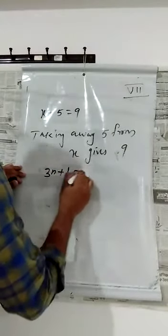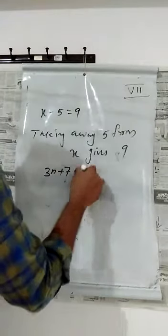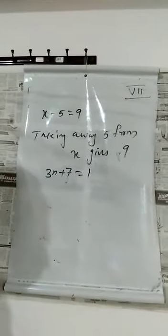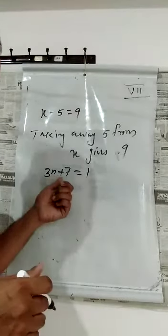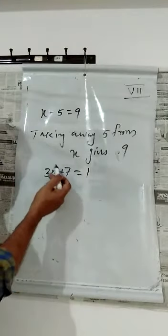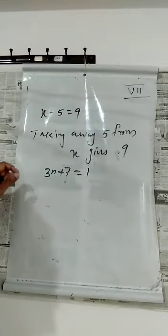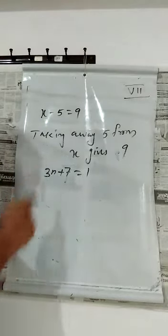One more: 3n plus 7 equal to 1. In your textbook, page number 80, 3n plus 7 equal to 1. We are multiplying n three times and adding 7 — the result is 1. So we can write: add 7 to 3 times of n, the result is 1.